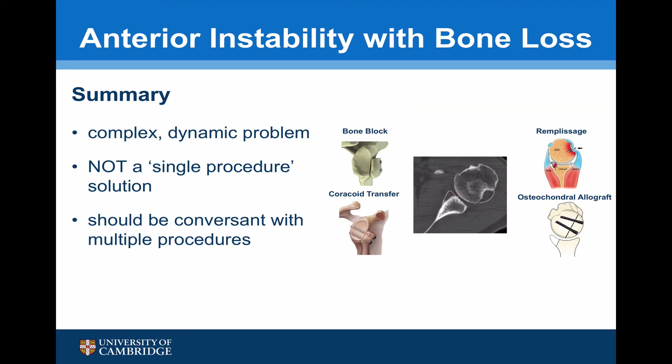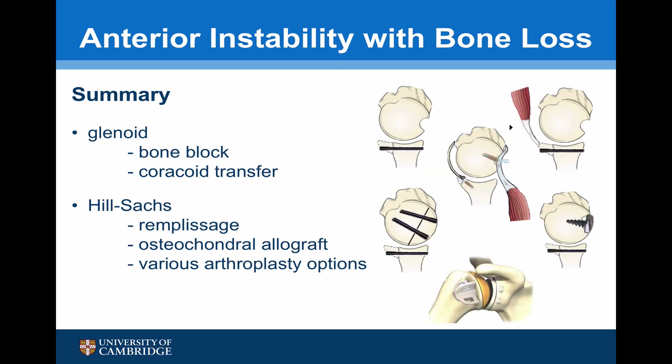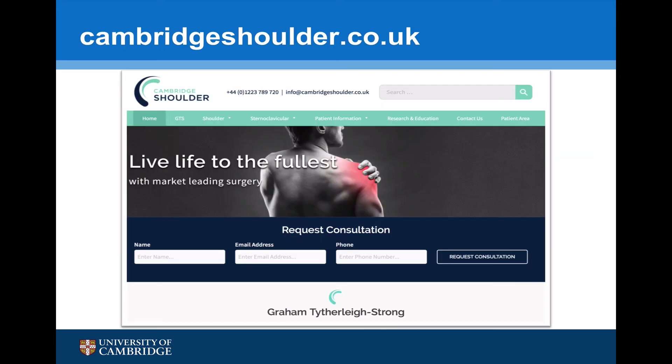In summary, anterior instability with bone loss is a complex dynamic problem that can often only truly be appreciated at the time of surgery. There is not a single procedure that will provide a solution to all problems. Any surgeon considering taking on this type of surgery should be conversant with multiple procedures. For anterior loss on the glenoid, a bone block procedure or coracoid transfer may be considered, and in the unusual circumstances of a massive Hill-Sachs lesion, an osteochondral allograft or various types of arthroplasty may be options. For more information, visit cambridgeshoulder.co.uk.